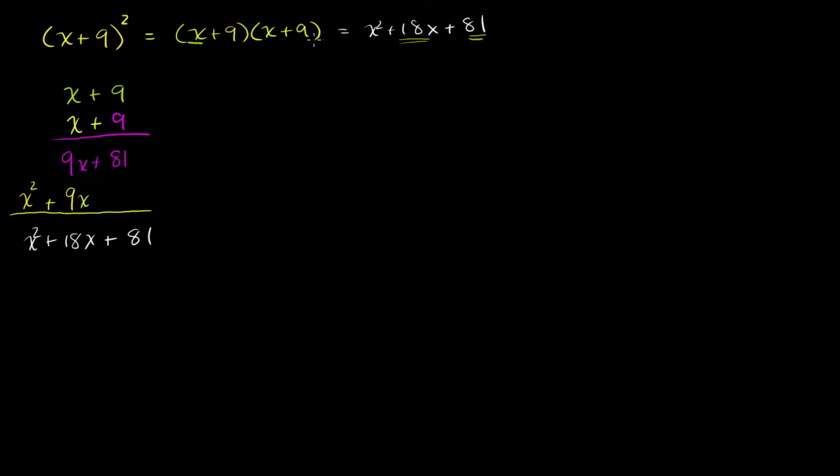Well, we multiplied this x times 9 to get 9x. And then we multiplied this 9 times x to get another 9x. And then we added the 2 right here to get 18x.